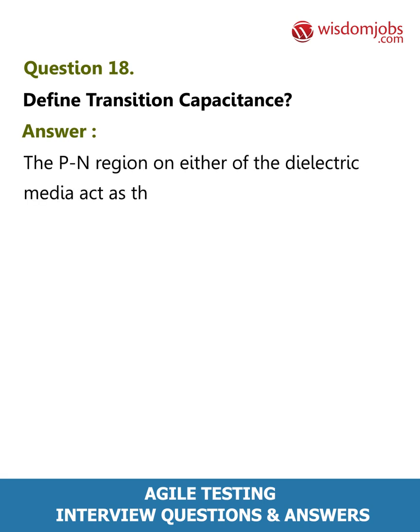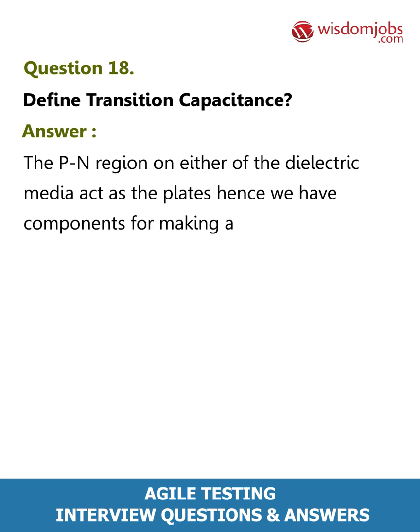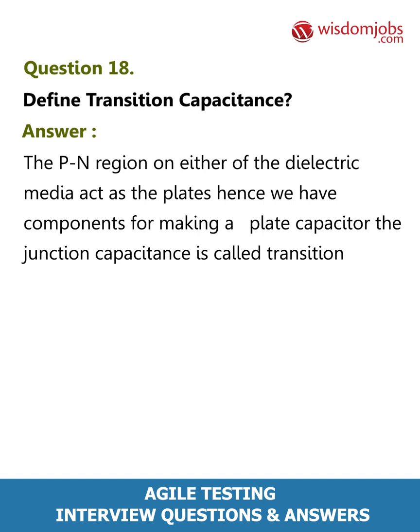Question 18: Define transition capacitance. Answer: The PN regions on either side act as dielectric media and act as the plates, hence we have components for making a plate capacitor. The junction capacitance is called transition capacitance.